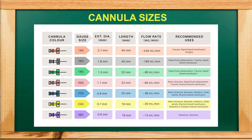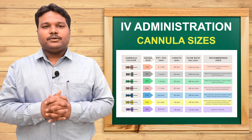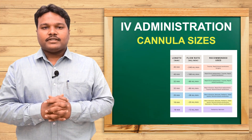According to the patient's need, the drug is administered using the appropriate gauge of needle. For example, when rapid fluid replacement is needed, we use the 14 gauge — a thick cannula through which a large volume of fluid can be administered. For pediatric use, we use yellow and purple color gauges, and during operations we use the green color cannula.